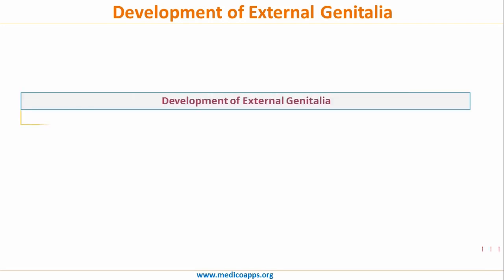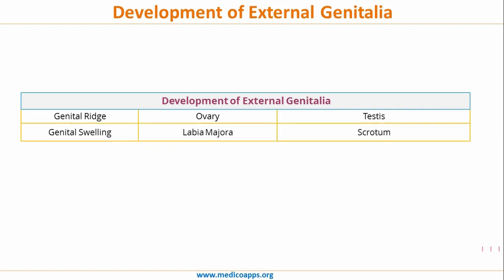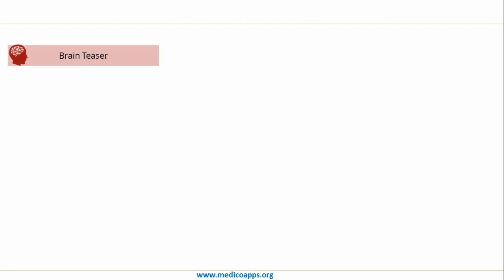Moving forward, let's look at the same information in tabular form. The genital ridge forms the ovary in females and the testis in males. The genital swelling forms the labia majora in females and the scrotum in males. The genital fold forms the labia minora in females and the ventral aspect of the penis and penile urethra in males, while the genital tubercle forms the clitoris in females and the glans penis in males.